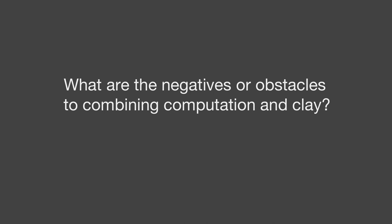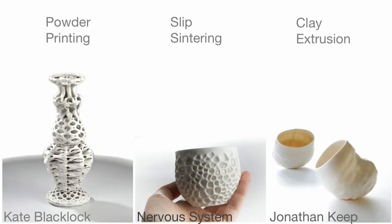The next question: what are the negatives or obstacles to combining computation and clay? There's no real industry driving this, so there hasn't been a lot of resource put in, compared to say metal 3D printing for aeronautics. The jury is out on which process to go with: there's powder printing with z-corps machines, slip sintering with a laser machine in France, Porcelight coming out of the States, and the clay extrusion many of us use. Ultimately it's horses for courses — it depends what you want to do; all have strengths and weaknesses.